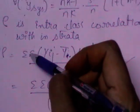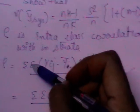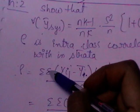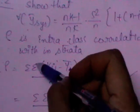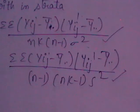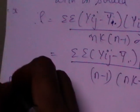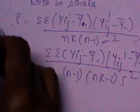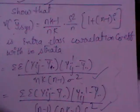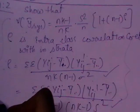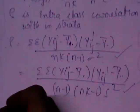Theorem 2 is also for the variance of ȳ_sys, but expressed in terms of ρ and s², where ρ is the intra-class correlation coefficient. In the examination, the entire statement will be given to you, so don't worry. Let us start the proof.